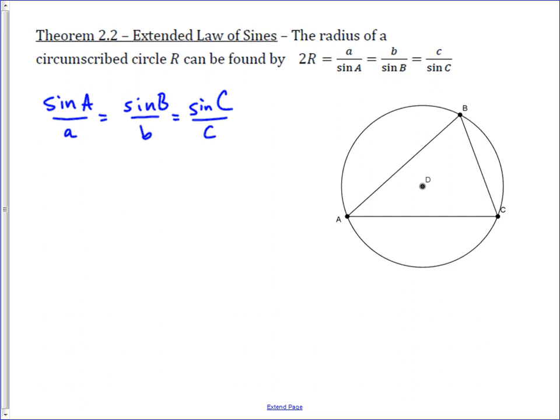These ratios are all the same, where A is the angle at A, and then side a is the opposite side, side b is opposite angle B, and side c is opposite angle C.